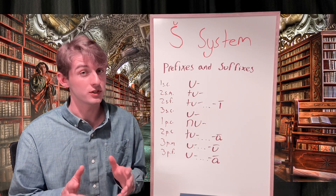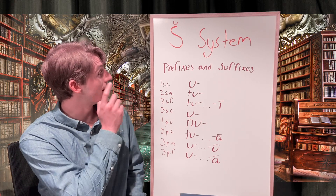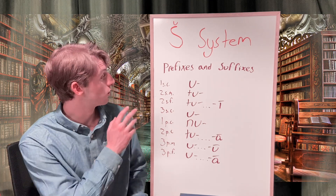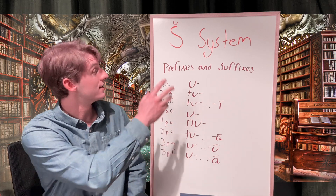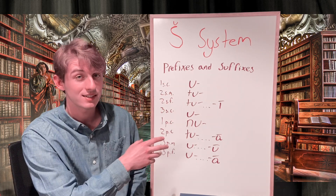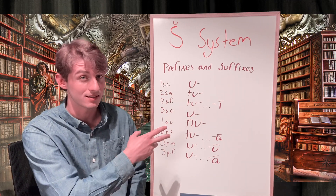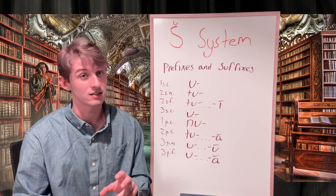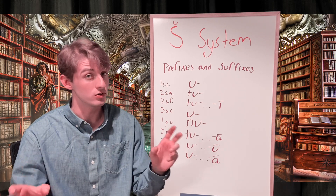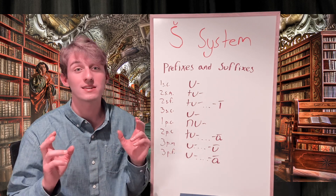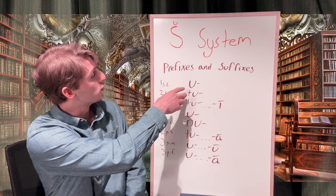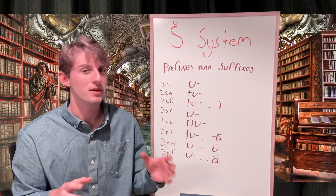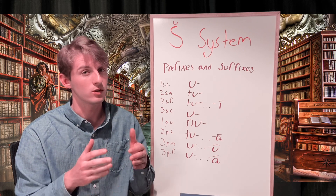Before looking at our other paradigms for the Sheen system, let's look at the prefixes and suffixes we're going to add to these stems. The prefixes and suffixes used in the Sheen system are the exact same as those in the D system, because the Sheen and D system are a pair, while the G and N system are a separate pair using different prefixes and suffixes. This is important to remember: when you see a U, a tu, or a nu at the beginning of a verb, you can immediately narrow down what system you're probably looking at.